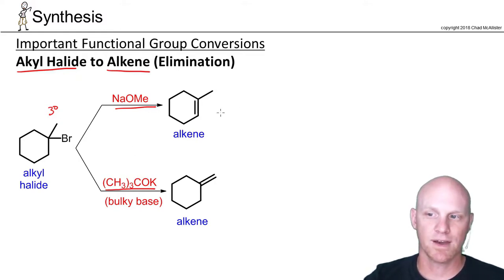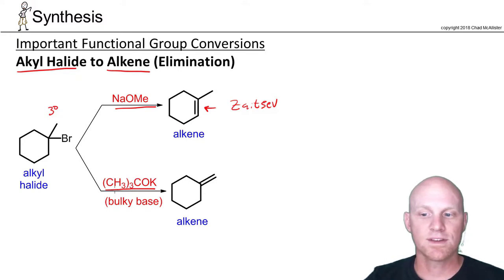My regular non-bulky base forms the more substituted alkene. We'll call that the Zaitsev. Lots of alternate spellings for Zaitsev. Or in this case, we can get the less substituted alkene with the bulky base. Some people call that anti-Zaitsev. Some people will call it Hoffman. I'll just go Hoffman, that's a little more common.